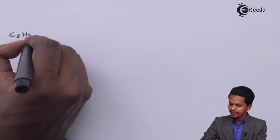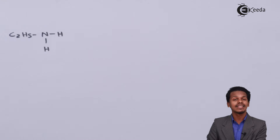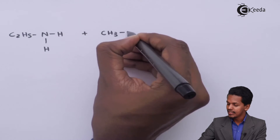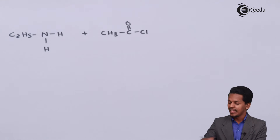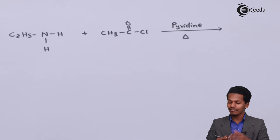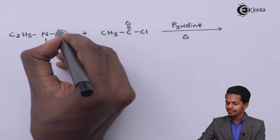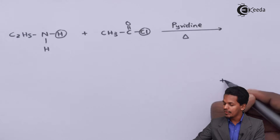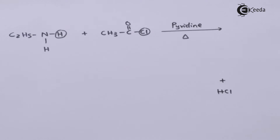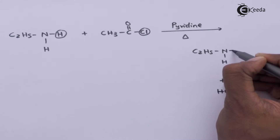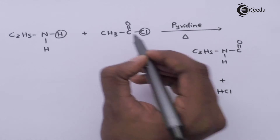For example, suppose we consider C2H5NH2, that is ethylamine, and we react it with CH3C=OCl — acetyl chloride — in the presence of pyridine at higher temperature. What happens is one of the hydrogens attached to the nitrogen atom takes away the Cl, and HCl is removed as a byproduct. The main product we get is C2H5NH–C=O–CH3.